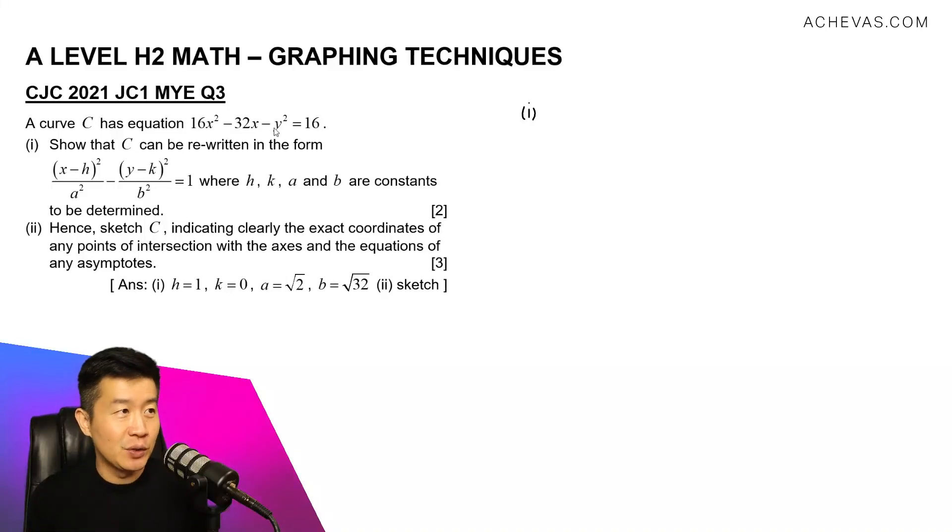We are to rewrite this equation into the form that is given to us. This is one of the hyperbolas. So this question is related to conics. Let us write down this first. So we have 16x² - 32x - y² = 16. We're going to carry out a completing square process for this.